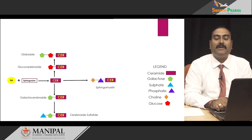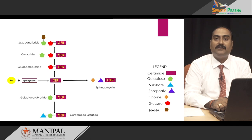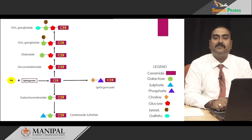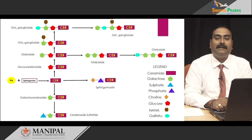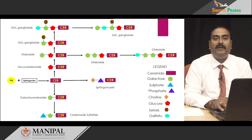From glucocerebroside, by addition of one more galactose, we get a globoside. This globoside can be converted into a ganglioside by addition of N-acetylneuraminic acid (NANA). From a globoside containing glucose and galactose, if we add NANA, we get GM3 ganglioside. To GM3, if I add N-acetylgalactosamine, I get GM2 ganglioside. To GM2, if one more galactose is added, I get GM1 ganglioside. From the globoside containing glucose and galactose, if one more galactose is added we get another variety of globoside, or if N-acetylgalactosamine is added we get yet another variety. In this way we can synthesize different types of sphingolipids starting from ceramide, by adding different carbohydrate residues.